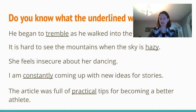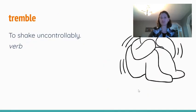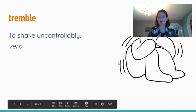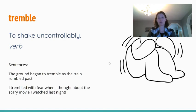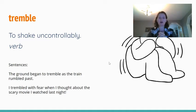The first word, tremble, means to shake uncontrollably. It's a verb, which means it's an action word — a doing word. Some sentences that might use the word tremble: the ground began to tremble as the train rumbled past, so the ground is shaking uncontrollably. I trembled with fear when I thought about the scary movie I watched last night.